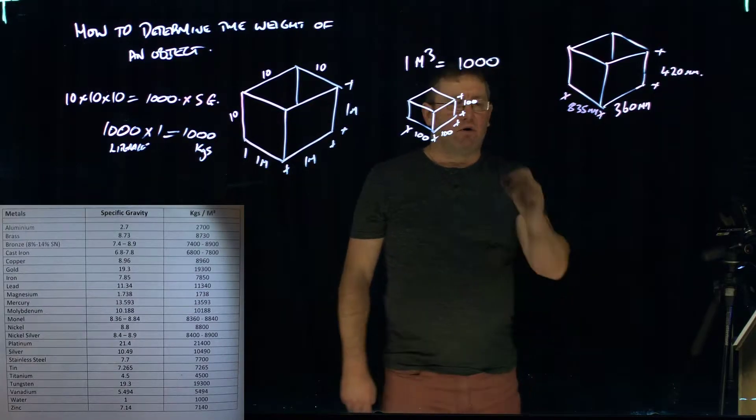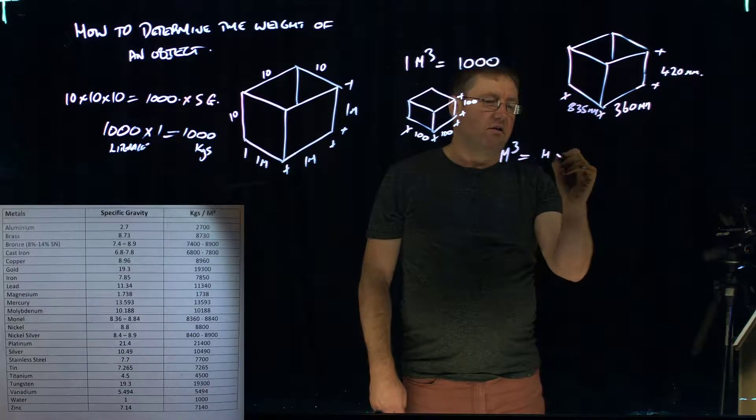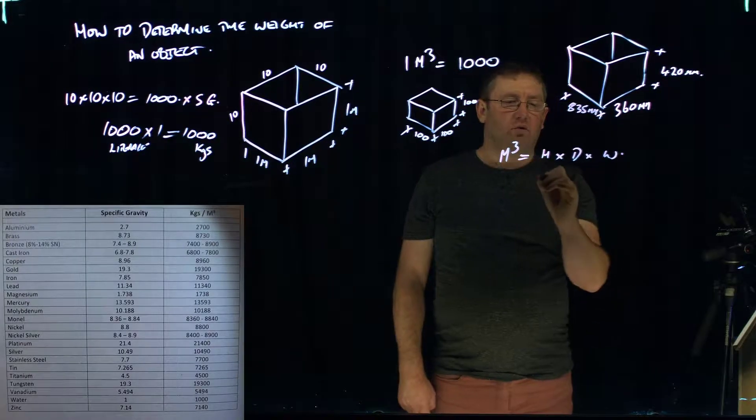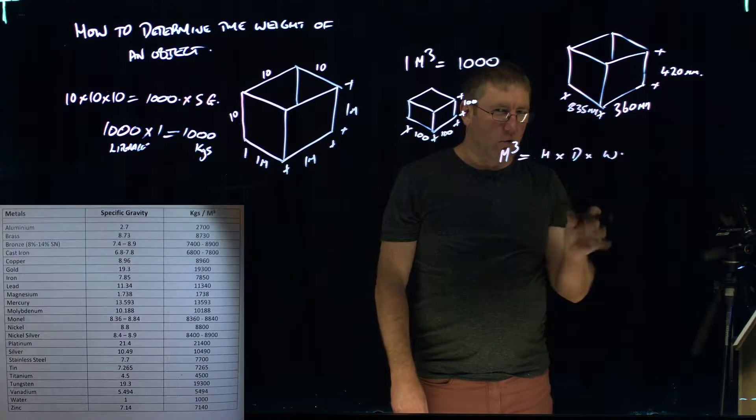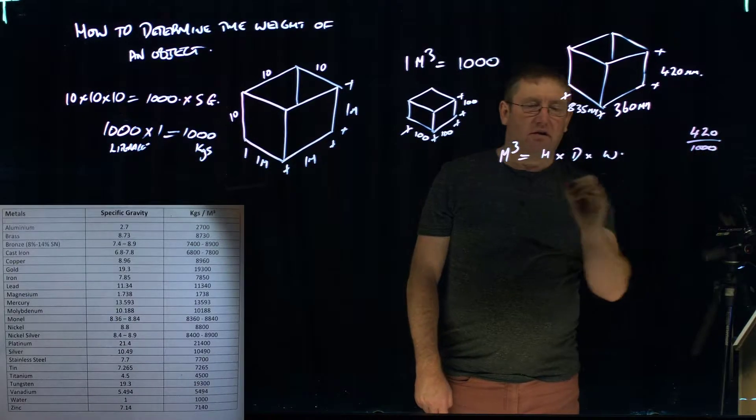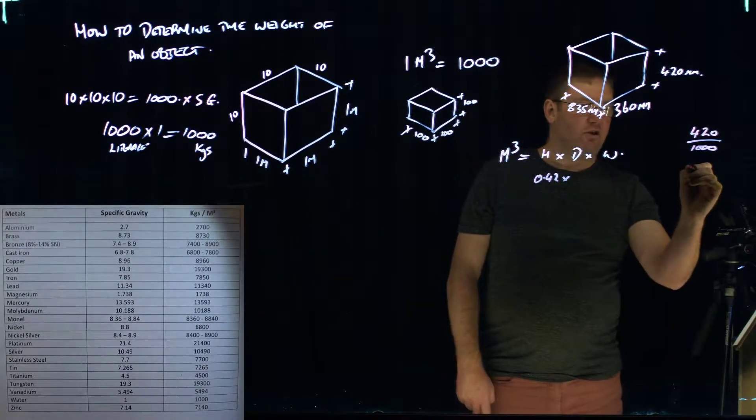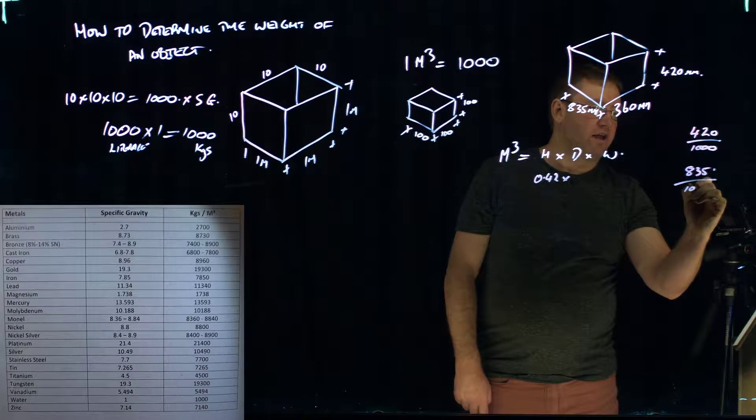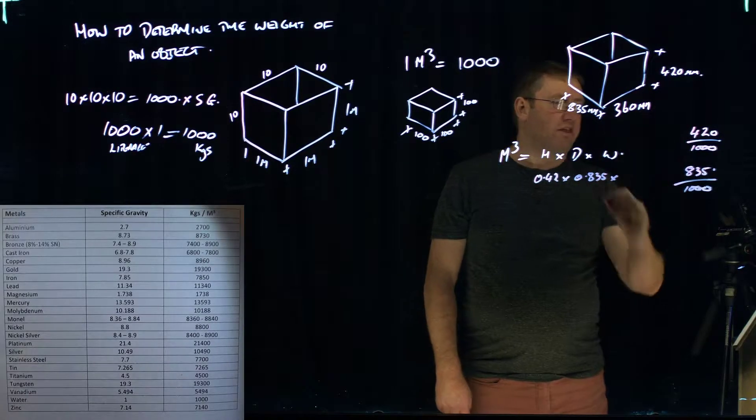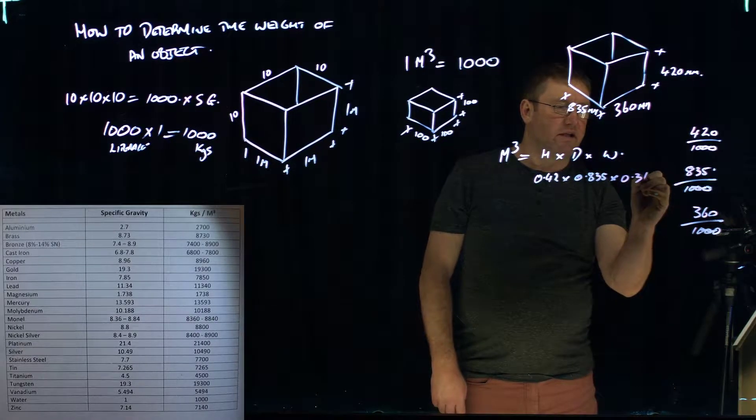So remember when we want to work out the meters cubed, that's what we want to do first. It is comprised of the height times the depth times the width. The height is 420 millimeters. Now remember to put it into the equation in meters. So 420 divided by 1,000 equals 0.42 times the depth is 835. So 835 divided by 1,000 equals 0.835. And the width is 360. Convert that to meters, you get 0.36.